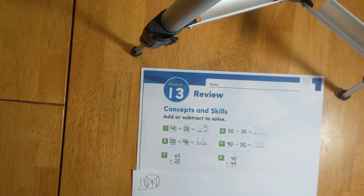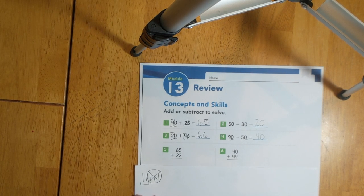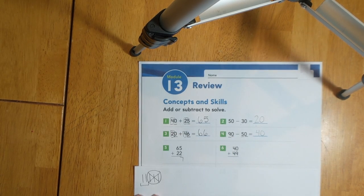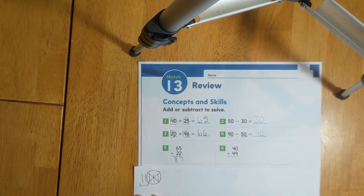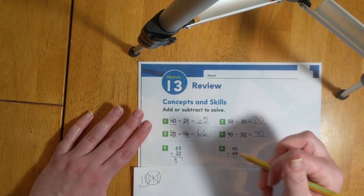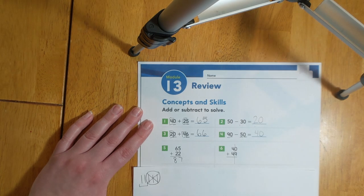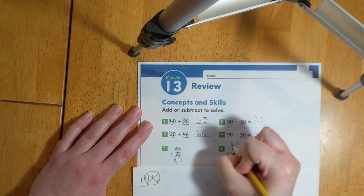Number five is 65 plus 22. We know that five plus two equals seven. Six plus two equals eight. Something that can be helpful when you're solving these problems is draw a line down the middle. That way it will help separate your ones and your tens.